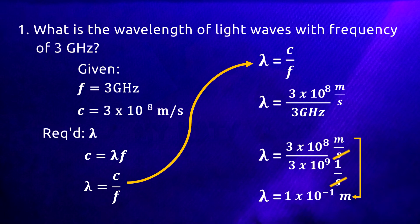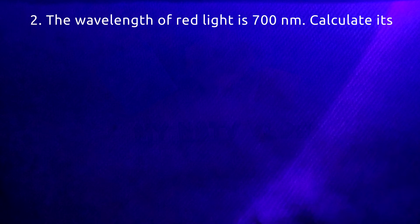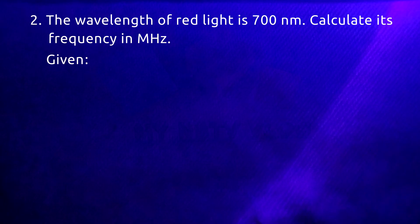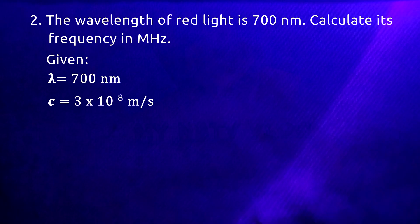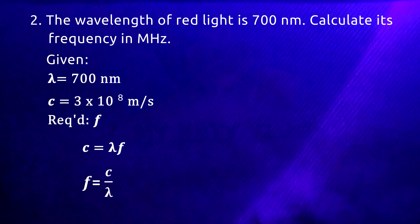Let's try another one. The wavelength of red light is 700 nanometers — calculate its frequency in megahertz. The given is wavelength equal to 700 nanometers. We again assume the speed of light in a vacuum: 3 times 10 to the 8 meters per second. We are required to find frequency in megahertz. Using C equals lambda f, we derive the equation for frequency: f equals C over lambda, or speed of light divided by the given wavelength.